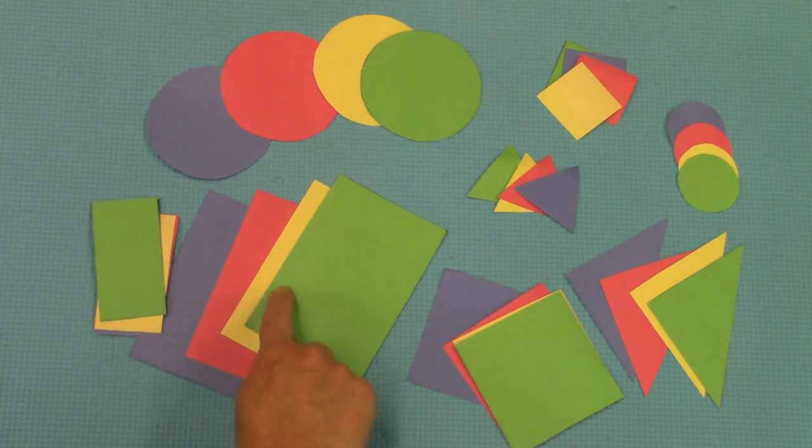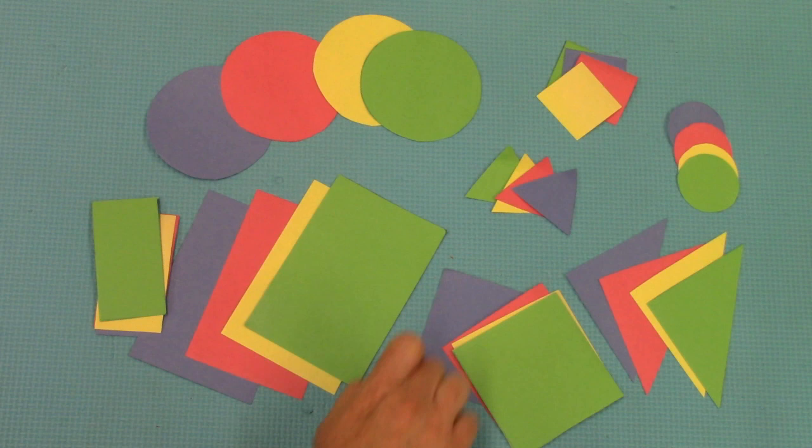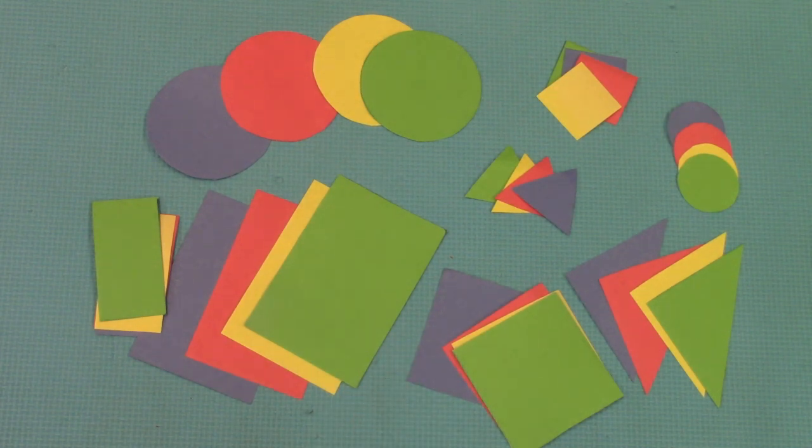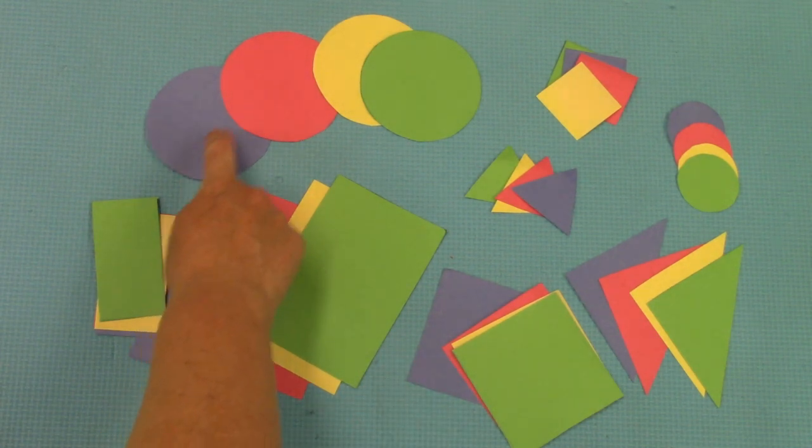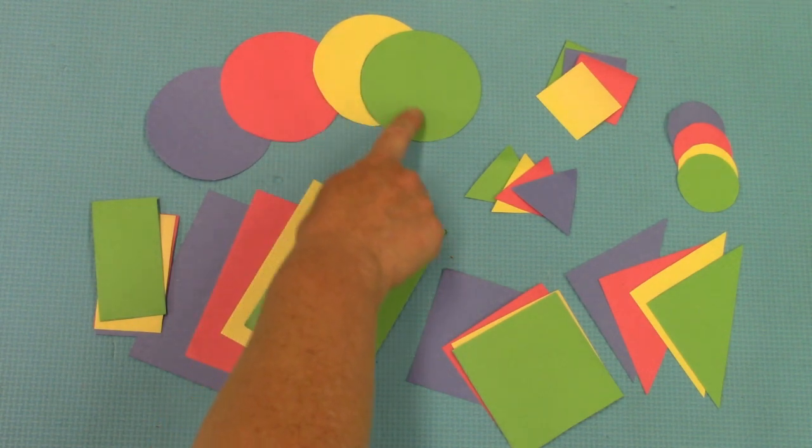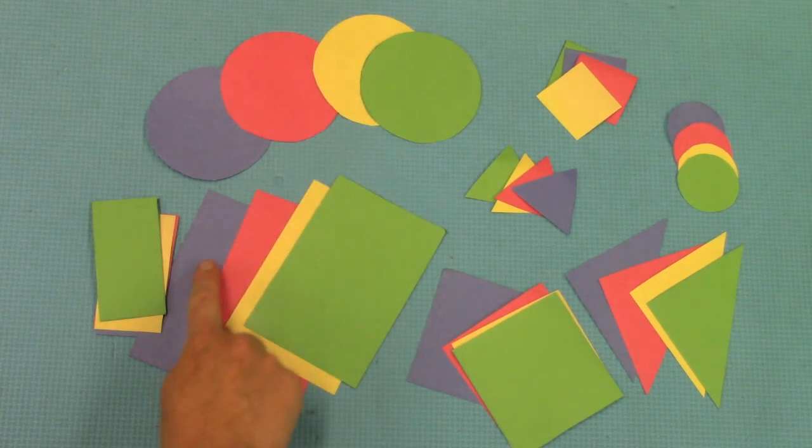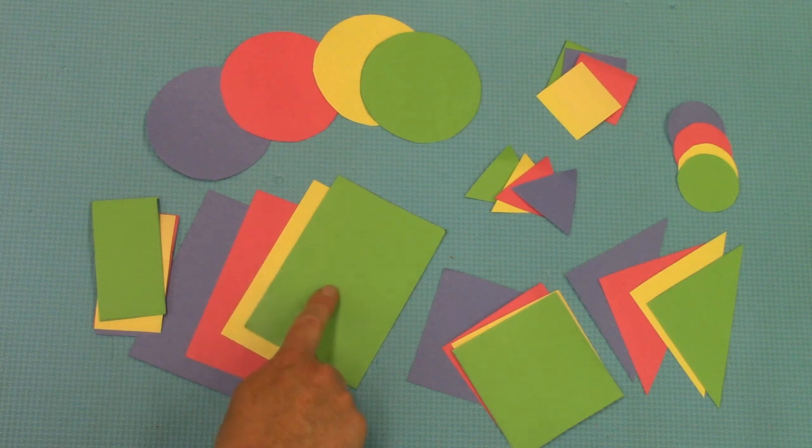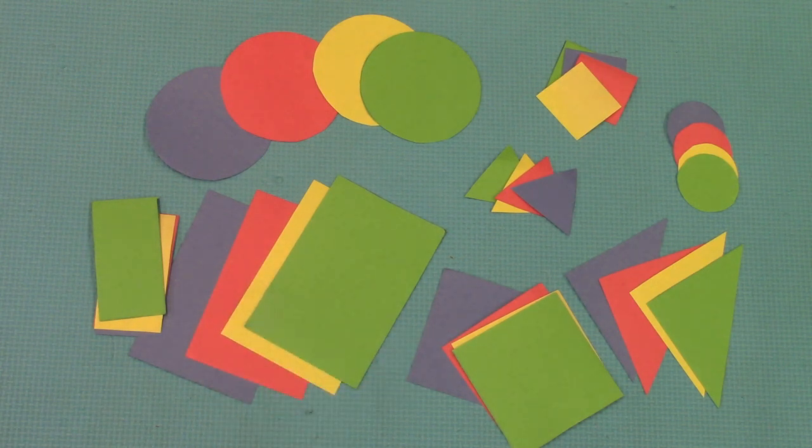Take a look at all of these pieces. What different colors do we have? Blue, red, yellow, and green. And there are blue, red, yellow, and green for each shape.